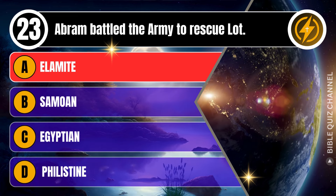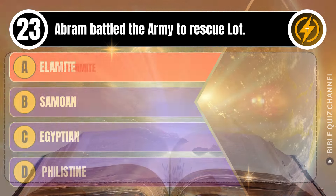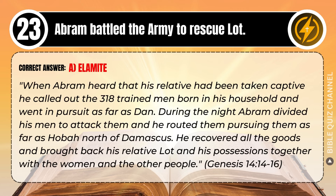Correct answer: A. Elamite. Explaining the Bible — When Abram heard that his relative had been taken captive, he called out the 318 trained men born in his household and went in pursuit as far as Dan. During the night, Abram divided his men to attack them and routed them, pursuing them as far as Hobah, north of Damascus. He recovered all the goods and brought back his relative Lot and his possessions. Genesis, chapter 14, verse 14 to 16.